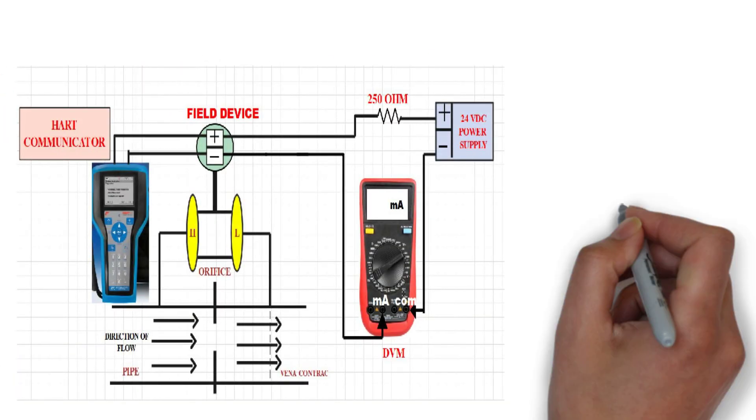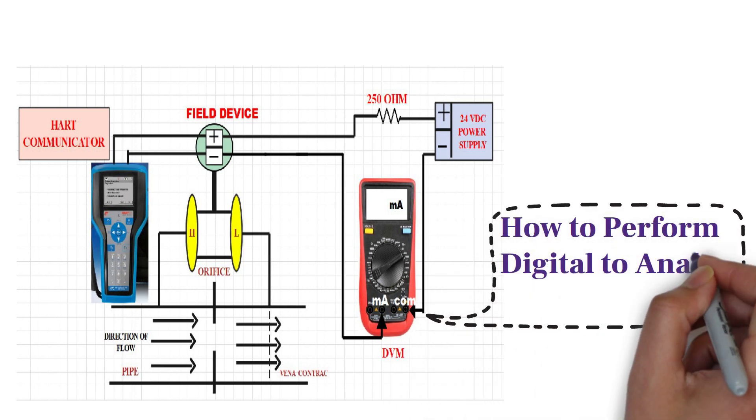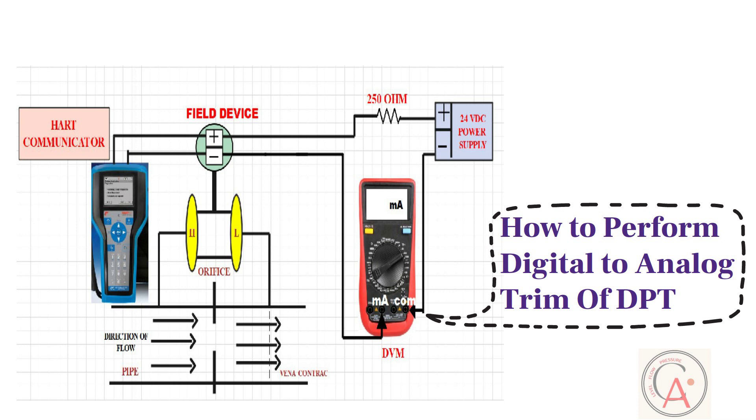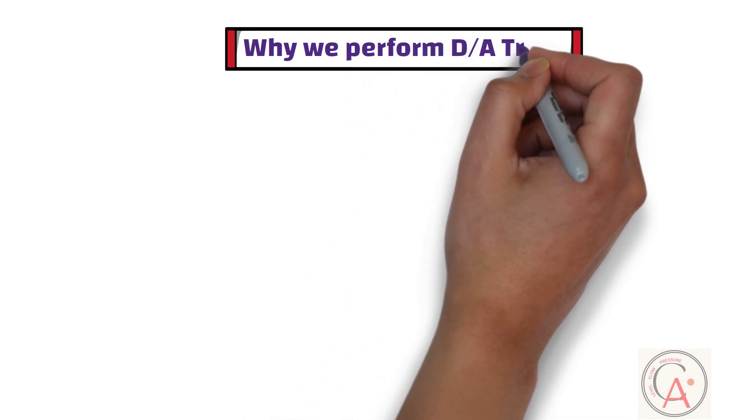In today's video, I'm going to show how to perform digital to analog trim of differential pressure transmitter by using HART communicator. First of all, let's learn why we need to perform digital to analog trim.